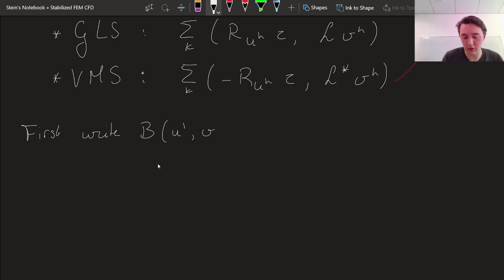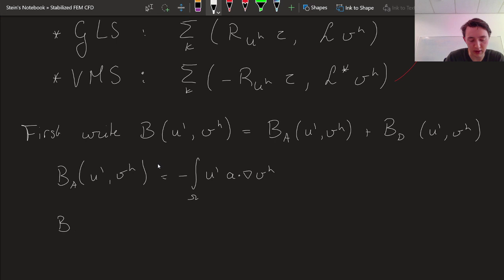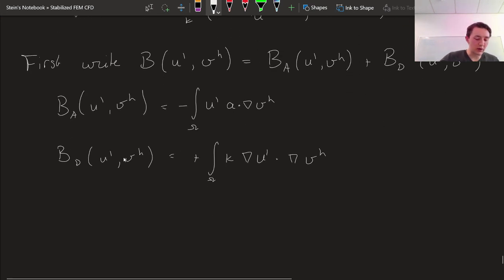I also use the core scale test function. Now in principle this is a bilinear form, it can act on any set of functions but I'll use the definition that we're writing to as an advective part and a diffusive part. Where the advective part was defined as minus U' A dot gradient VH.